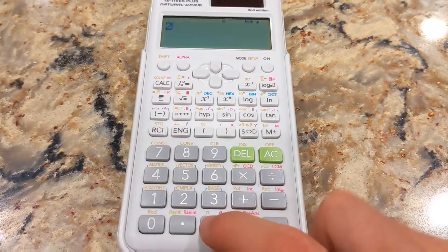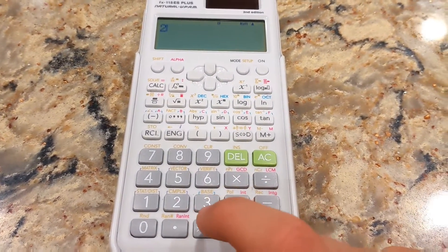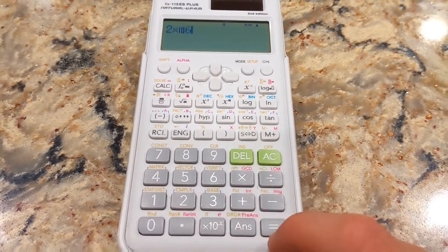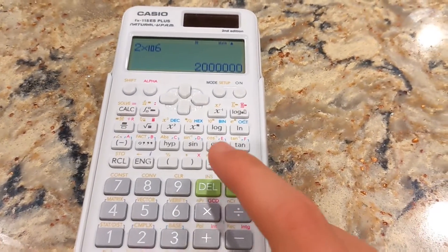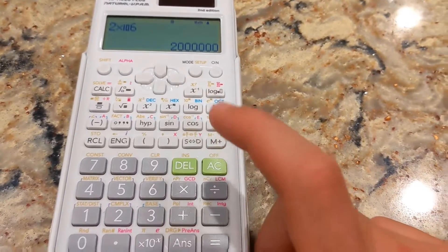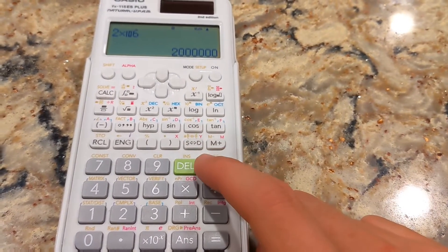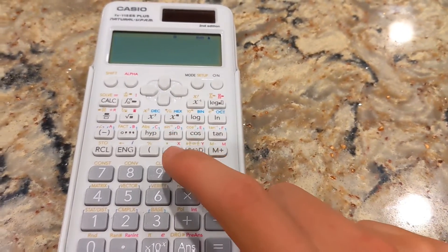So maybe 2 times 10 to the 6 equals, and it'll give you the full number in standard form. So that's very cool.